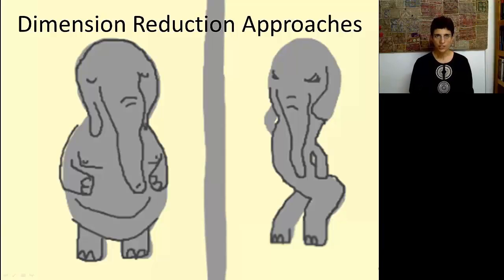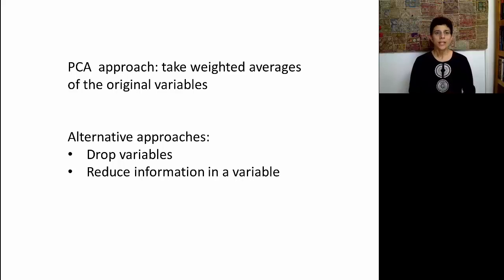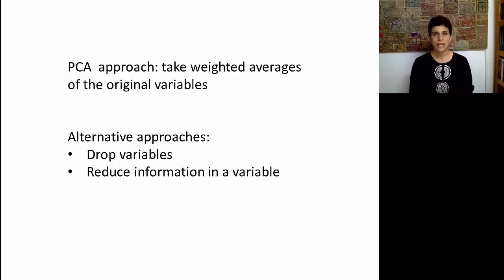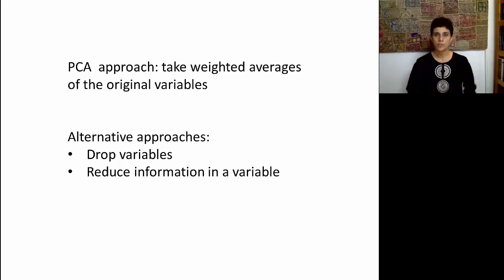In the previous sessions, we looked at principal components analysis as an important dimension reduction approach. Let's consider a few other approaches. In PCA, we took the original variables, or measurements, and we converted them into principal components, which are basically weighted averages of the original variables. But we can also think about other ways to reduce the number of columns that we have in our dataset.